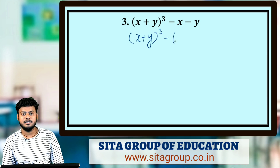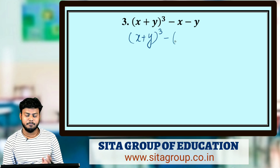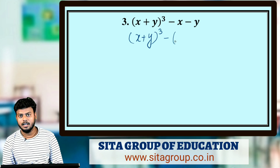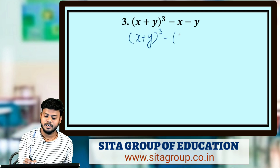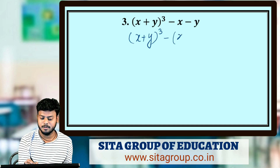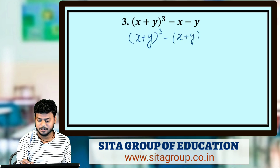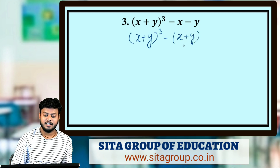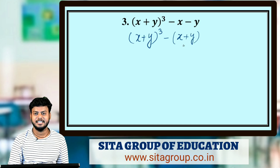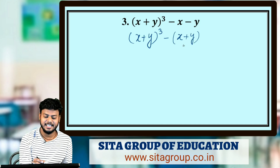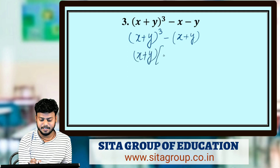Remember, if we take minus as common, then the signs will change — positive becomes negative and negative becomes positive. So minus(x - y) becomes (-x + y), which means +(x + y). Now in both terms, (x + y) is common. Take (x + y) as the common factor.